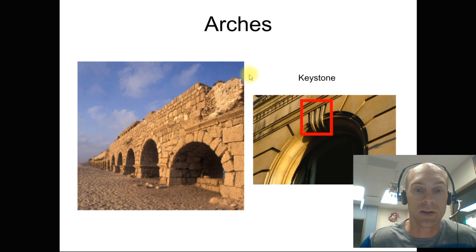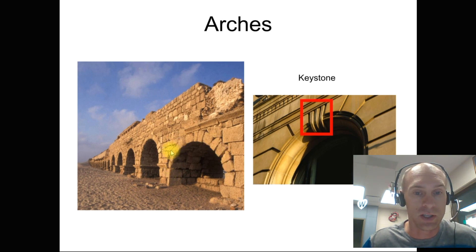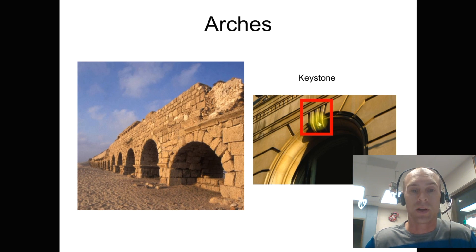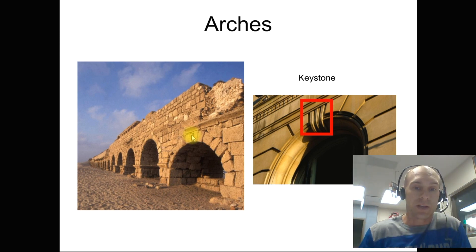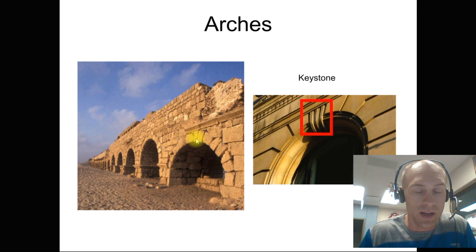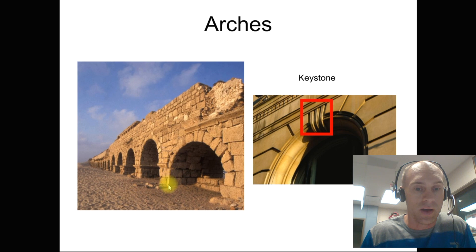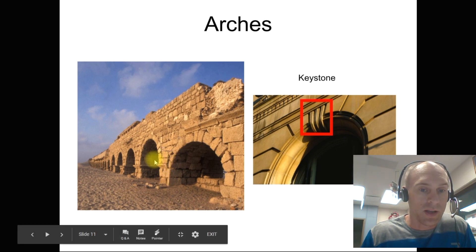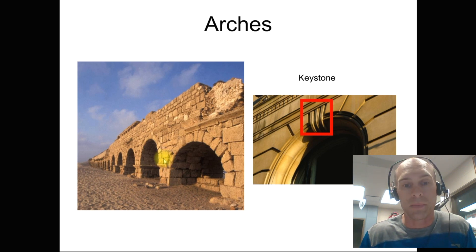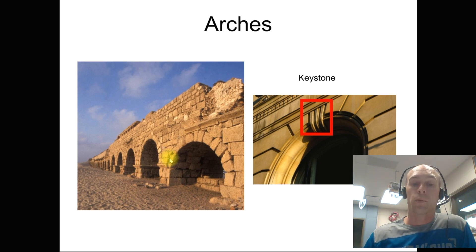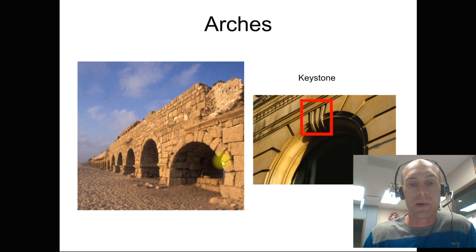Then the Romans came around and developed arches to overcome the limitations of post and lintel. An arch is a sequence of typically trapezoidal stones called voussoir. The keystone is always at the crown — the top of the arch. As the keystone is pushed down, forces redirect outward through each stone all the way to the base. The arches push against each other and hold one another up, allowing the Romans to bridge much larger gaps.